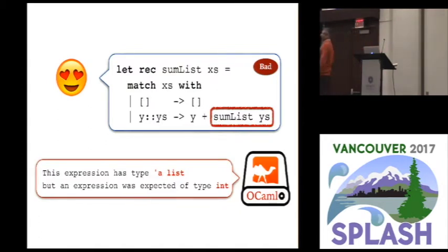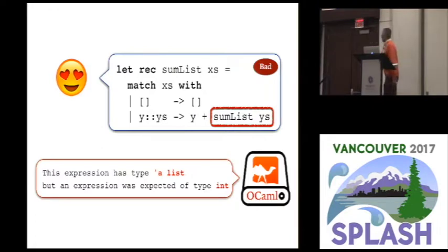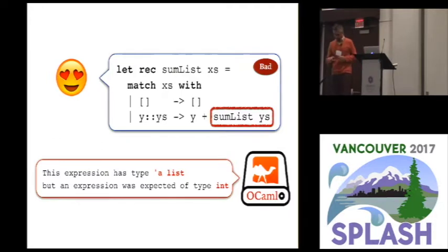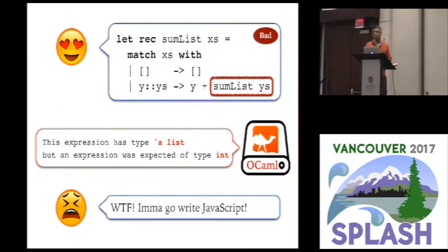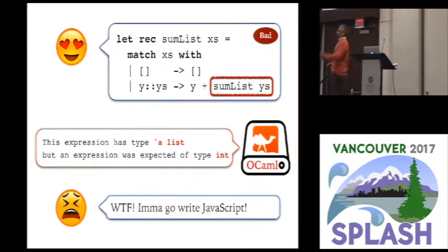Here's what happens. OCaml says: sorry, I don't like your program. There is a type error at this particular line — how dare you call sum_list with the argument y's. I was expecting to see an integer over here, but this expression has the type list, and I needed something of type int. The poor novice is like: we're just going to go back and write JavaScript. We head over to the gradual typing session and forget about the type system.